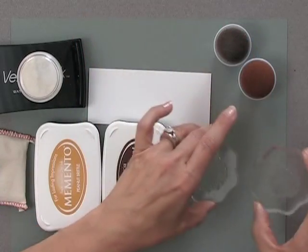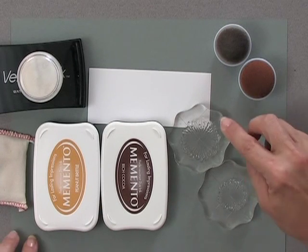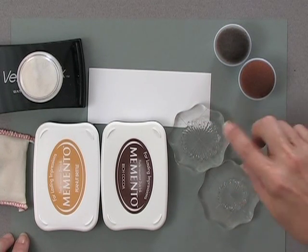Then you're going to need some stamps. I'm using two of the clear stamps from the new Sunkissed Autumn Stamp TV Kit. These are both the Dandelion stamps.